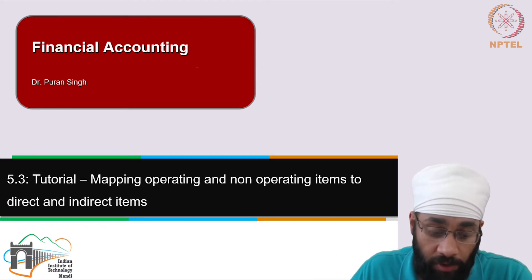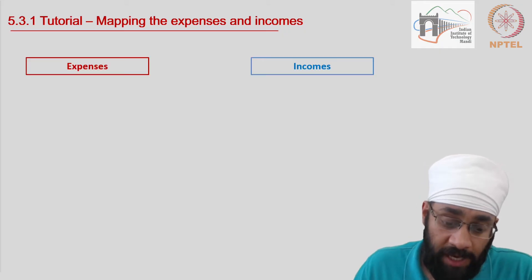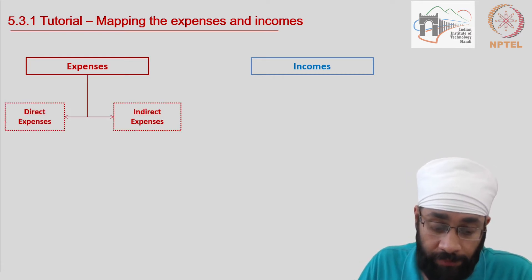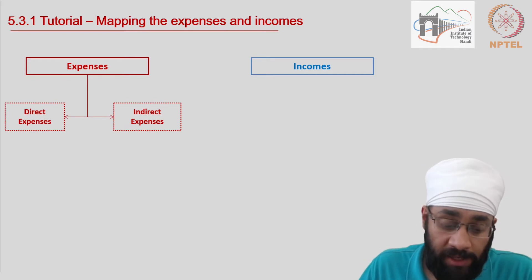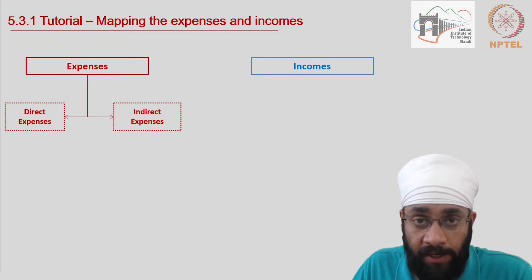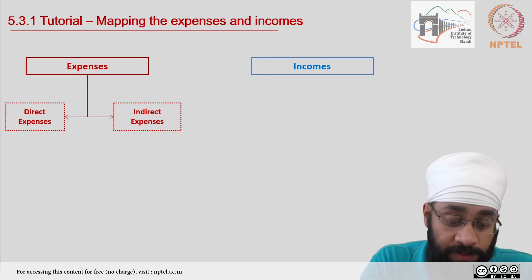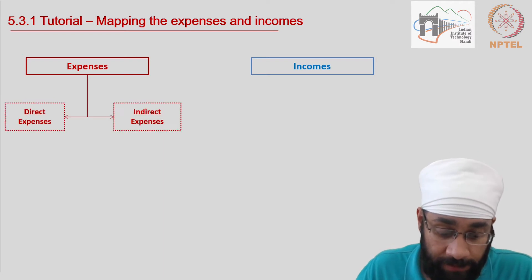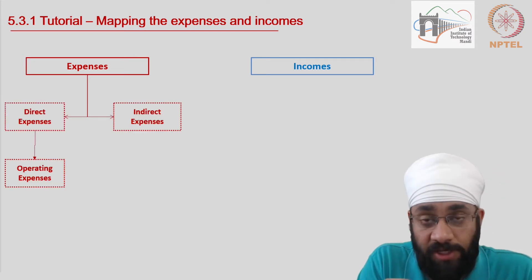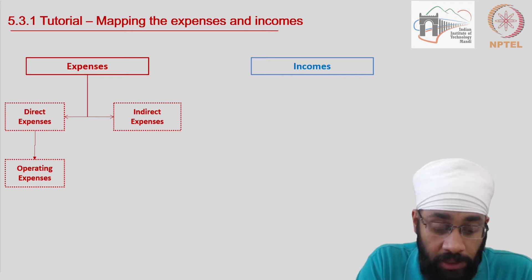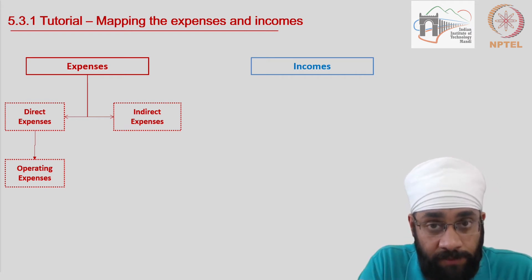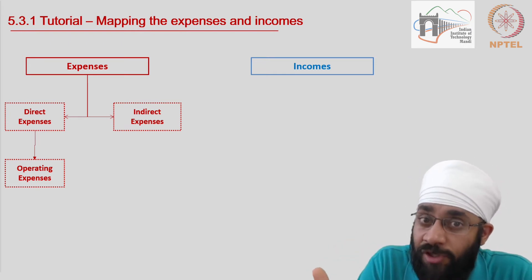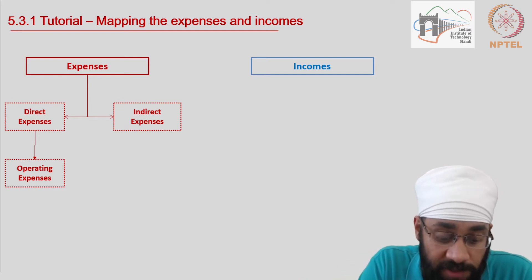Expenses and income are the two components — the two sides — of the profit and loss account. Expenses are categorized into direct expenses and indirect expenses. All direct expenses are related to manufacturing, and indirect expenses are post-manufacturing. All direct expenses are typically operating expenses because the direct expenses are the manufacturing cost of the product, which is primary to the business. So all direct expenses are operating expenses.